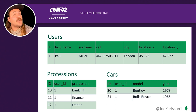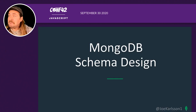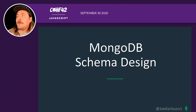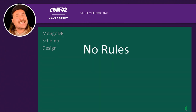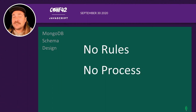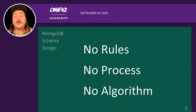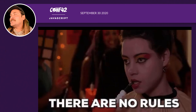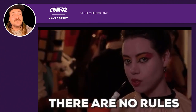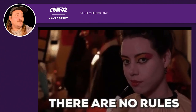MongoDB schema design — how do we do that? First of all, there are no rules. And if you're coming from a relational database, that's going to be kind of tricky. There's no process, and there's no pre-prescribed algorithm for how to split up that data. This can be freeing and kind of scary.